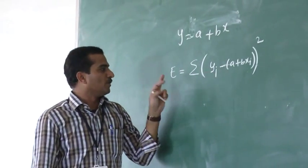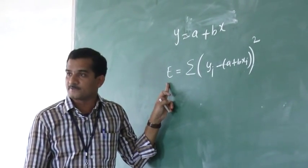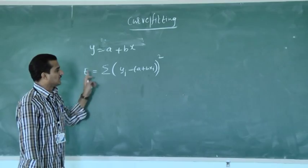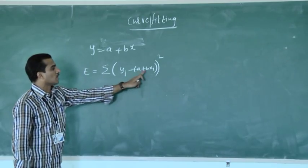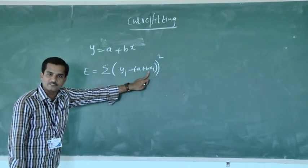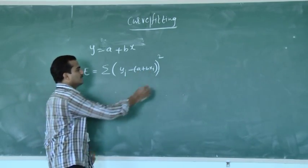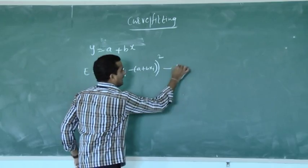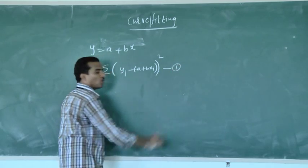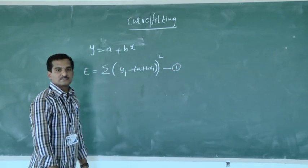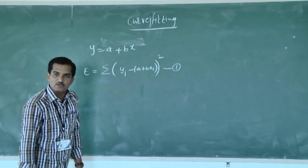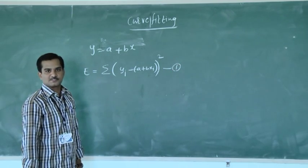The difference between observed and expected values — observed is given, expected is calculated. The principle of least squares tries to minimize this difference, called the error. Now we differentiate this error with respect to the two unknown constants A and B, and equating to zero will give two equations.